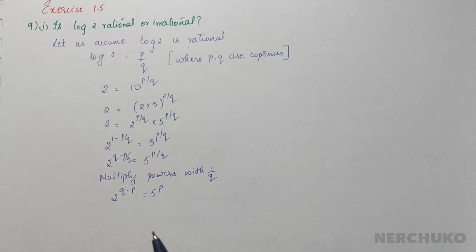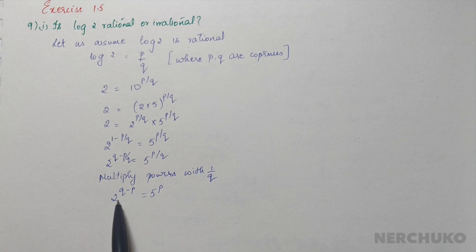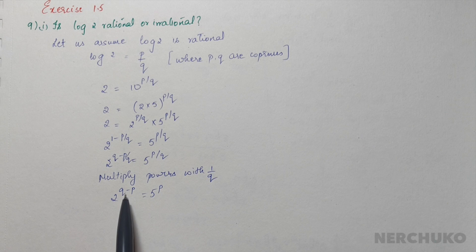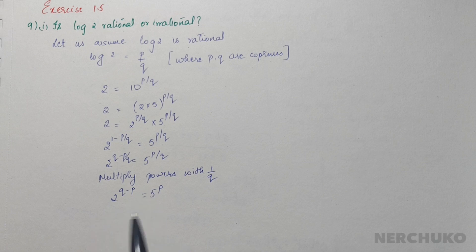So the bases are prime numbers and are not equal. You can observe that 2 power q minus p equals 5 power p, and they both are prime numbers. For any value of q minus p, they cannot be equal, which is a contradiction. Therefore, log 2 is irrational.